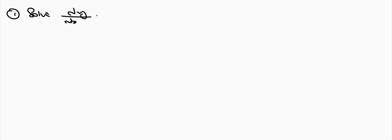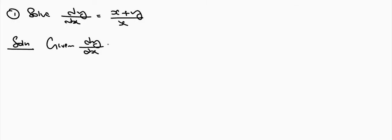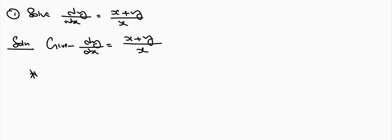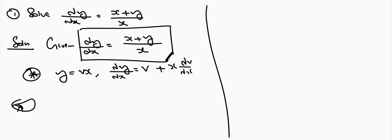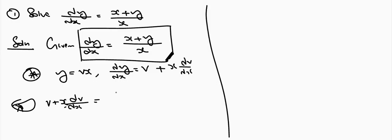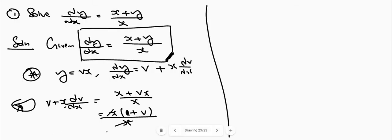Question number 1: Solve dy/dx = (x+y)/x. The given differential equation has numerator x+y, a homogeneous function of degree 1, and denominator x, also homogeneous of degree 1, so it is a homogeneous DE. First step: put y = vx, so dy/dx = v + x·dv/dx. Substituting, we get v + x·dv/dx = (x + vx)/x = (1+v)·x/x = 1+v.